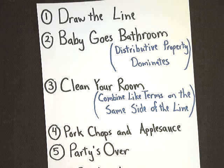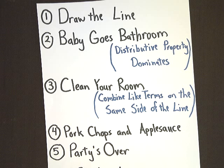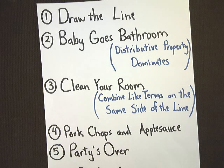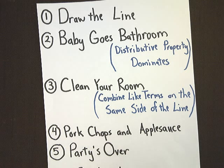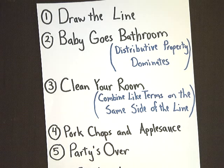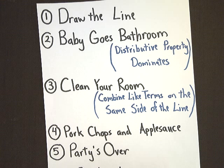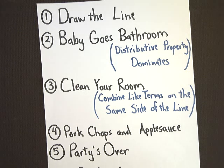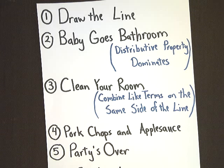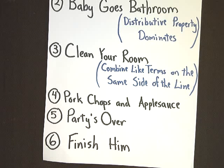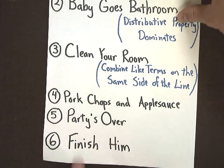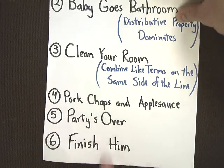Now, draw the line. When I solve equations, I do this system. Draw the line, which means draw a line down the equal sign, or in this case, the inequality. Baby goes bathroom, where you use distributive property. Clean your room, that's where you put all your terms together on the same side of that line. Pork chops and applesauce is a Brady Bunch reference. It deals with putting, if you had a room that you share with a sibling, you put all your brother's stuff on one side of the room and all your stuff on the other, and there's a tape line down the middle. Party's over is a quick reminder of how to deal with two-step equations, which is kind of where we're headed. And the last step, of course, is finish them, which is the single step. In this case, finish them becomes much more important than it had in the past.